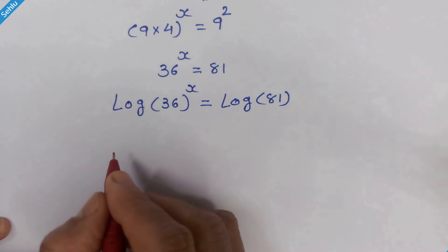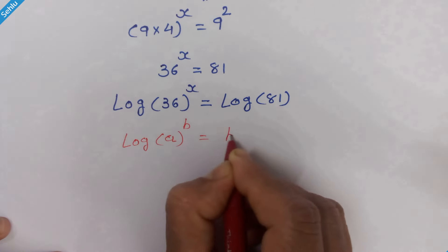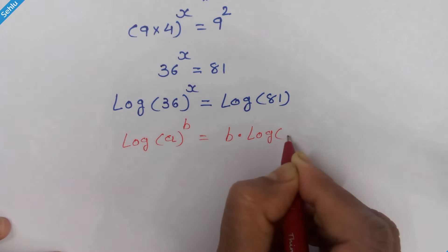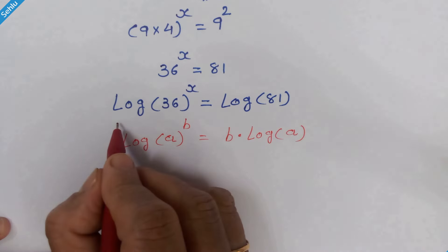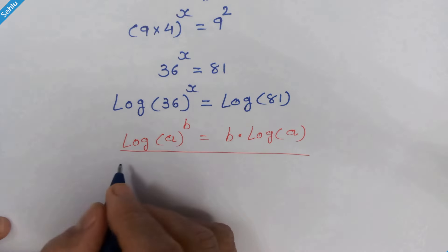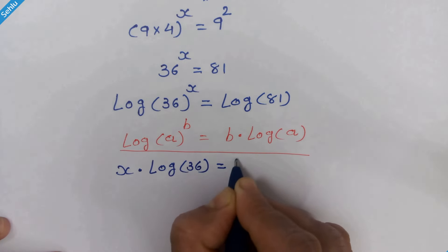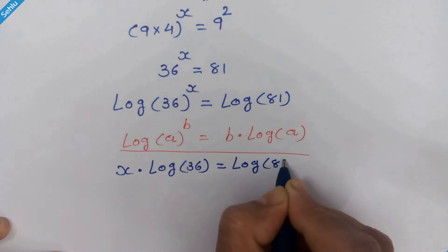Here we'll apply the rule where log of a raised to b equals b times log of a. So x can multiply with log of 36, giving us x times log of 36 equals log of 81.